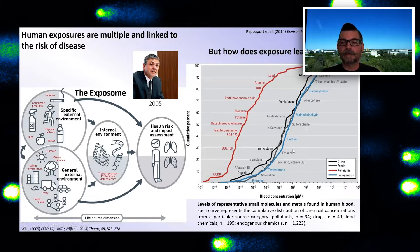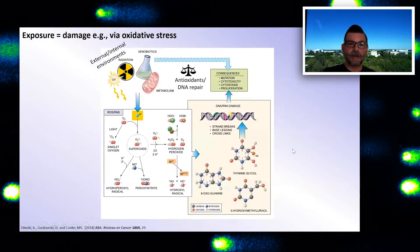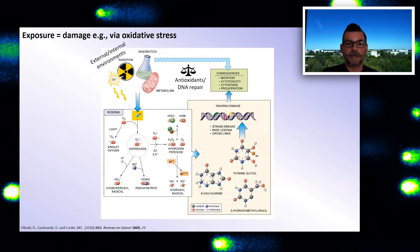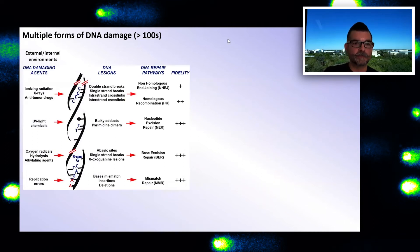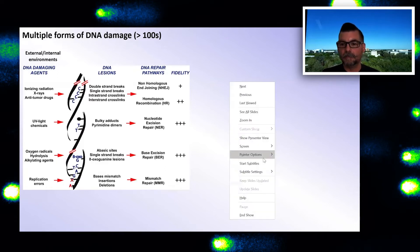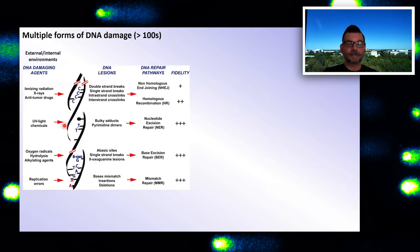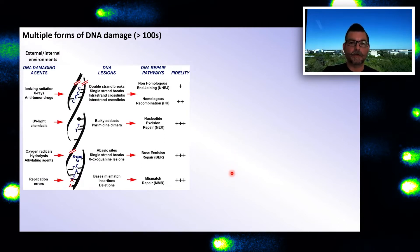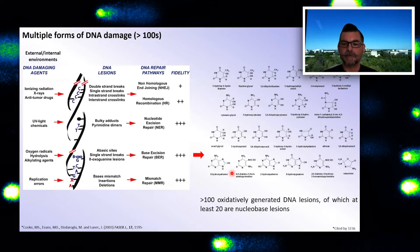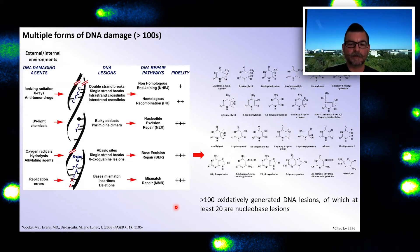We need to understand how exposure leads to disease. Some of that is because exposure leads to damage via various mechanisms, one of which is oxidative stress, leading to modification of DNA in particular. There are multiple forms of damage from all sorts of sources — ionizing radiation, x-rays, UV light, chemicals — and your own body is damaging you. This leads to a variety of DNA lesions, countered by DNA repair pathways. In the case of oxidatively generated damage, there are over 100 of these, at least 20 of which are nucleobase-based modifications.